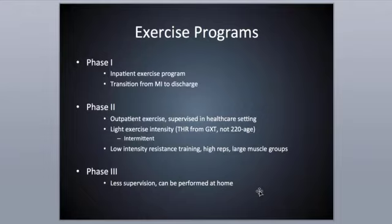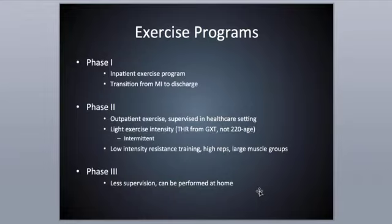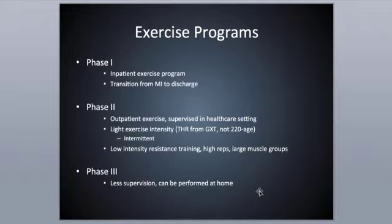Phase 2 is outpatient but supervised in the healthcare setting. It's light exercise intensity. The target heart rate comes from a graded exercise test — you should not use 220 minus age here, because these individuals have a really low VO2 max, often below 20 ml/kg/min, making max heart rate an unreliable measure. Exercise is intermittent — short, quick bursts of activity rather than long duration. Some low-intensity resistance training is also included, with high reps and large muscle groups, making it somewhat aerobic while still having a resistance component. Phase 3 is less supervised and can be performed at home.